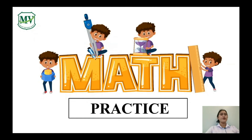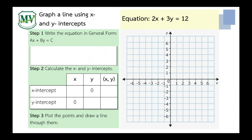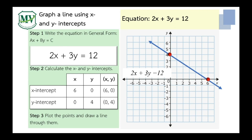Practice time. I'm going to give you three problems. In each problem, pause the video and solve it, then click play to check your answer. Problem number 1: graph 2x plus 3y equals 12. Since the equation is in general form, solve for the intercepts. If y equals 0, x equals 6. If x equals 0, y equals 4. Plot the points: x-intercept (6, 0), y-intercept (0, 4). Connect with a straight line. This is the line of 2x plus 3y equals 12.